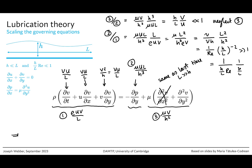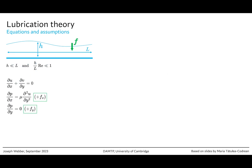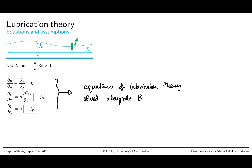So the pressure is just a function of position along the gap and does not vary significantly through the thickness of the layer — which is what we'd expect with a horizontally dominated flow. This summarises the equations of lubrication theory. Note that a body force can be added by performing the same scaling arguments and appending those two extra terms. These equations need to be solved alongside boundary conditions.